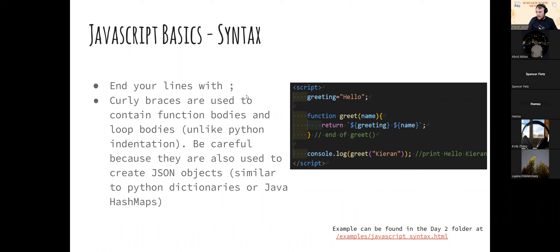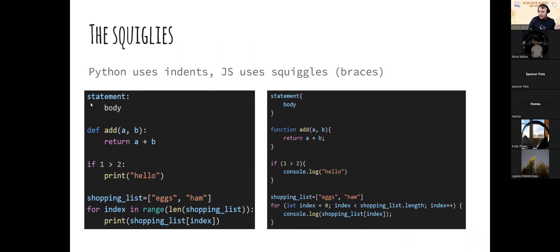Going through syntax basics again: you should end lines with a semicolon — not strictly required, but some older browsers prefer it. Curly braces are used inside functions, if-statements, and loops. They're also used to create JSON objects, which is basically the same as a dictionary in Python. The indentation itself doesn't matter in JavaScript; what matters is that the code is inside those curly braces — that's what defines the body.